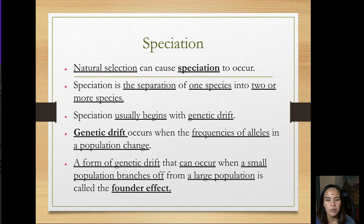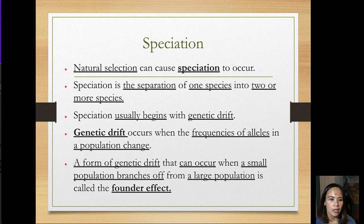Natural selection can cause speciation to occur. Speciation is the separation of one species into two or more species. Speciation usually begins with genetic drift, which occurs when the frequencies of alleles in a population change.